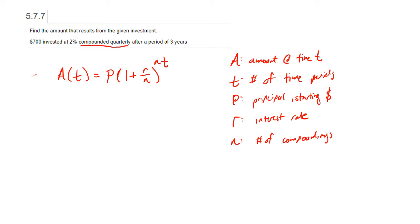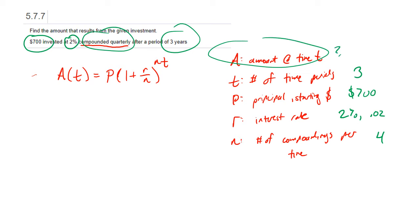So in this particular problem, we have two percent, that's our interest rate, 2% or 0.02. Seven hundred dollars is what we invested at the beginning. Compounded quarterly tells me that the number of compoundings per time period is four. The number of time periods is three years. So three years and four compoundings per year. And then A of T is what we need to figure out.